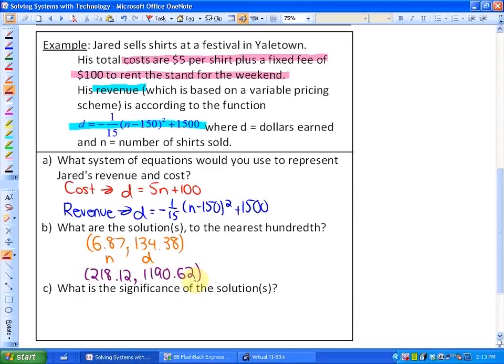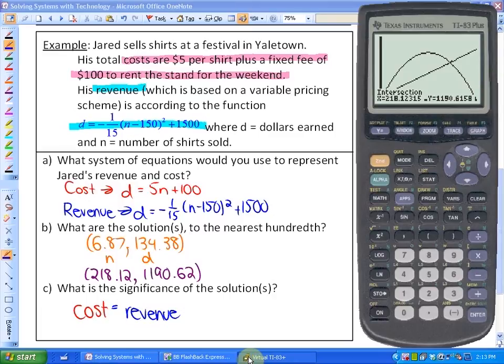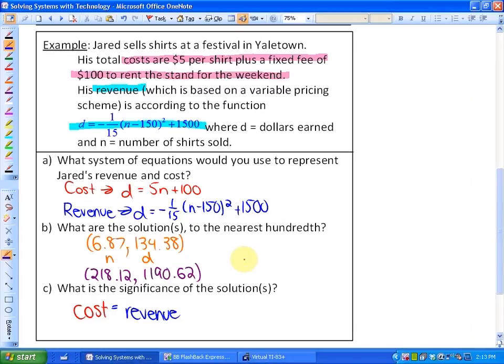Those are the intersections of the cost function and the revenue function. What is the significance of the solutions? These solutions is where cost equals revenue. In other words, he's breaking even here because what it costs him to make and sell the shirts equals the money that he's taking in. You may notice that this revenue curve is above the cost between those two points. So for him to make money, he needs to sell between roughly seven shirts and 218 shirts. Then he'll be making money.